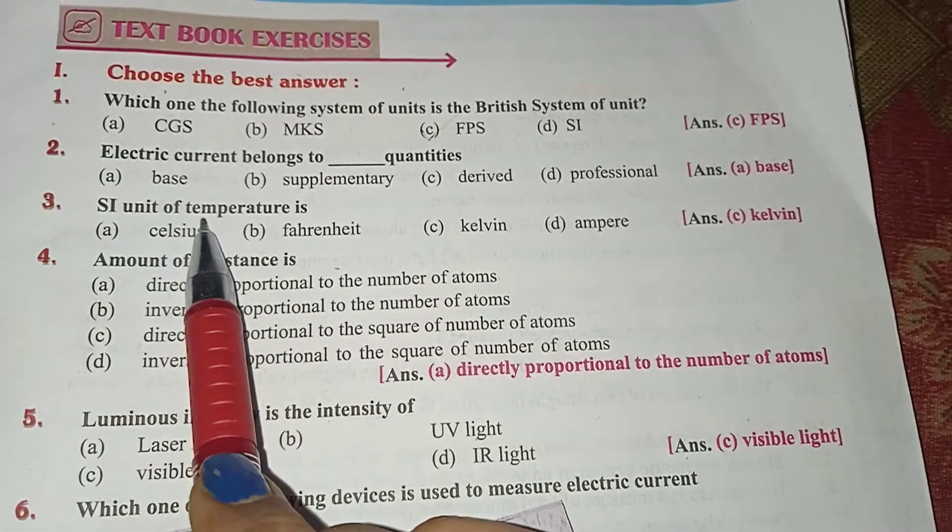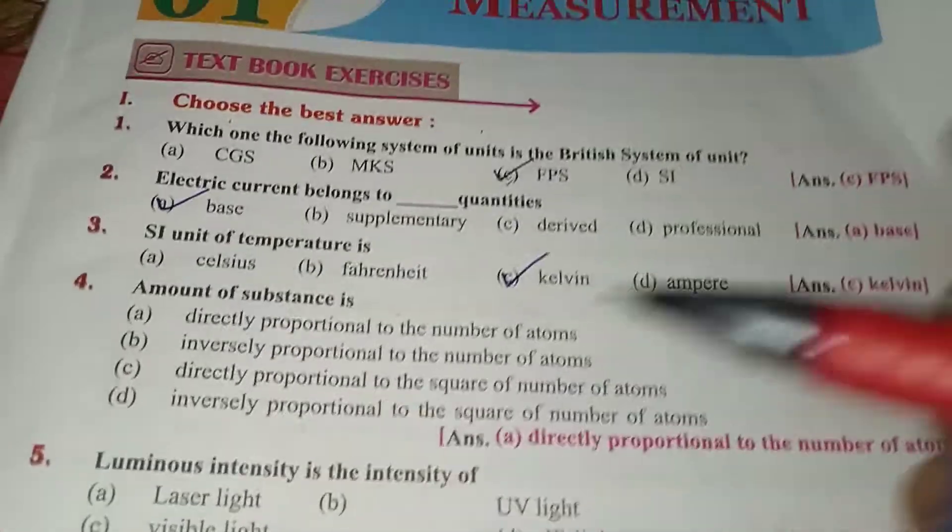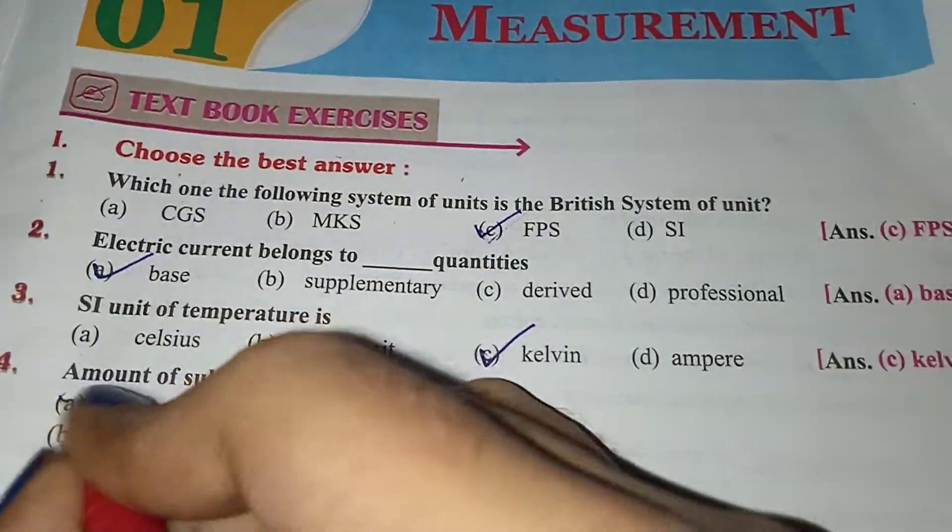SI unit of temperature is Kelvin. Amount of substance is directly proportional to the number of atoms.